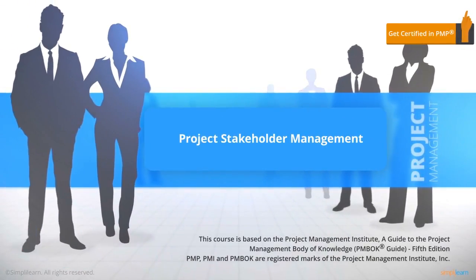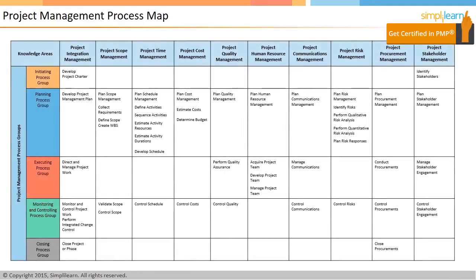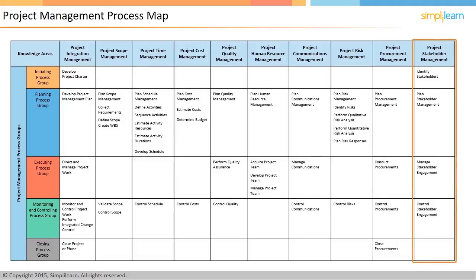Hello and welcome to PMP Certification Course offered by Simply Learn. In this lesson we will focus on project stakeholder management. There are 47 processes in project management grouped into 10 knowledge areas and mapped to five process groups. In this lesson we will look at the 10th knowledge area — project stakeholder management and its processes.